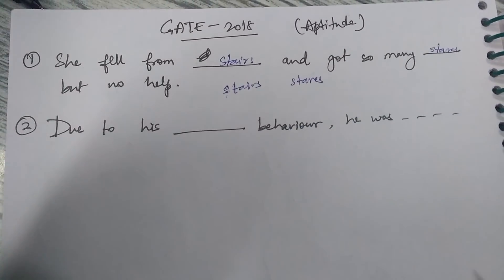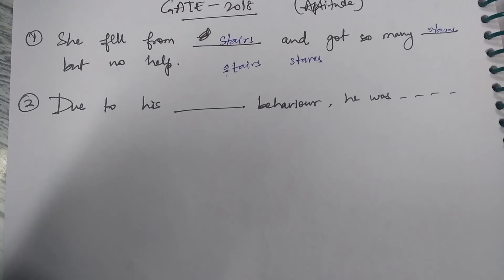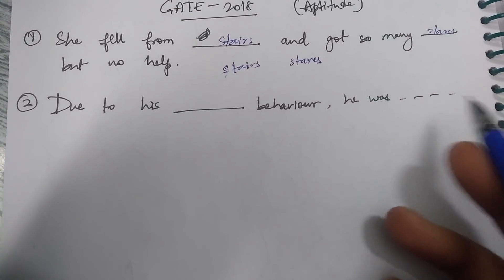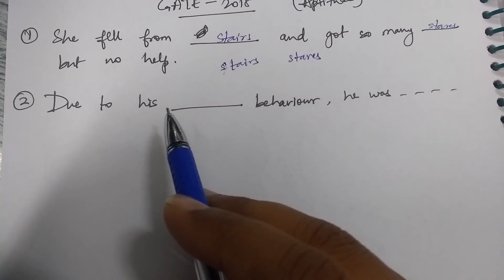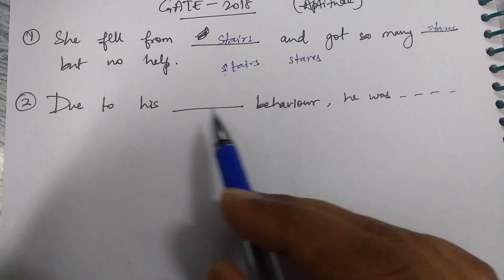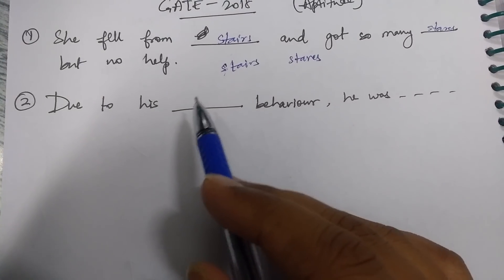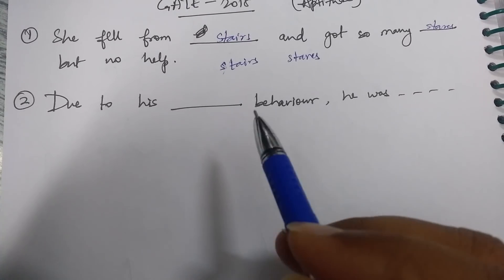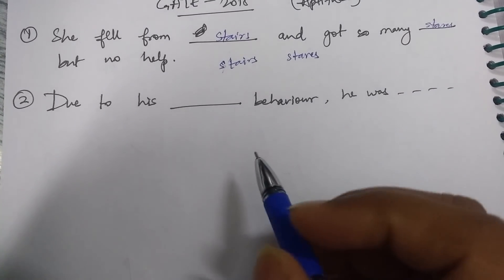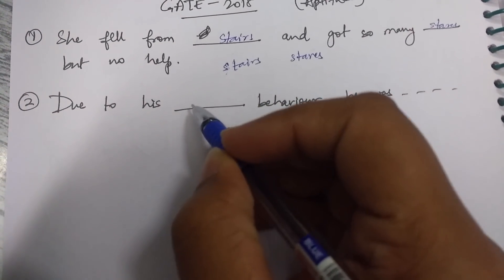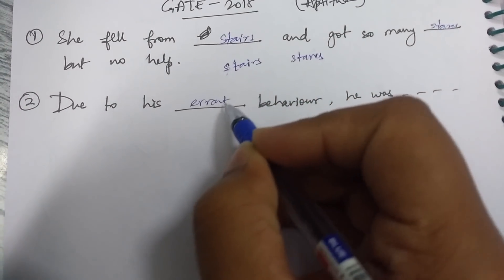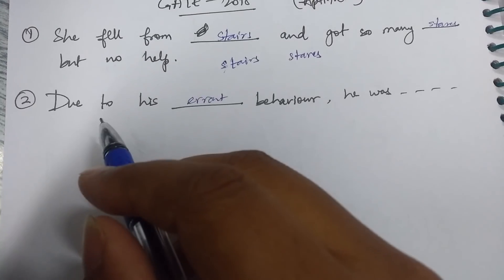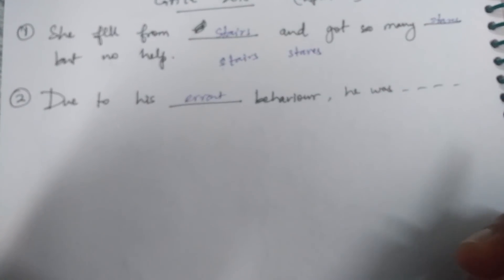Another English question was like: 'Due to his dash behavior, he was...' — something like that. Four options were given: rational, good, and errant among others. The correct option was 'errant' only, because errant means not so good. So the answer was: due to his errant behavior, he was punished or something similar.